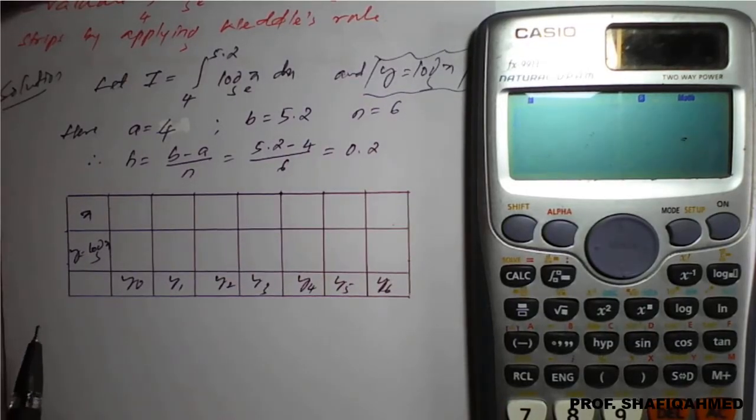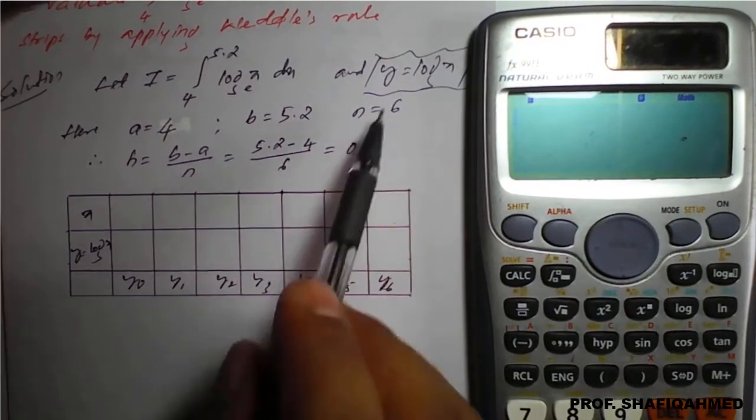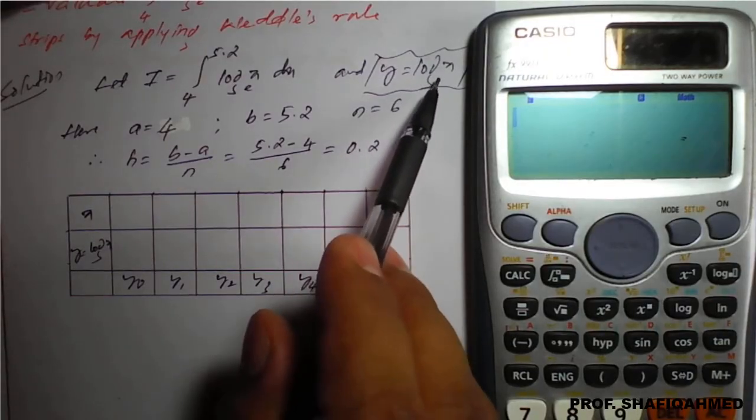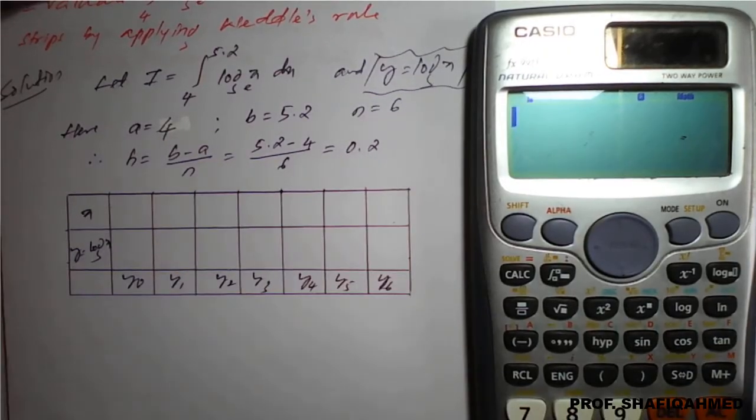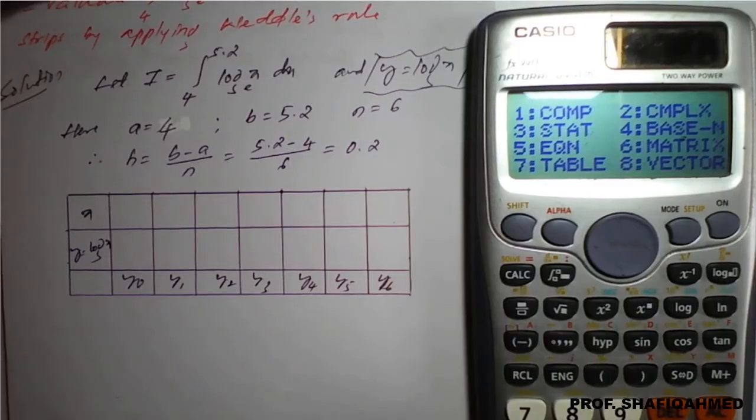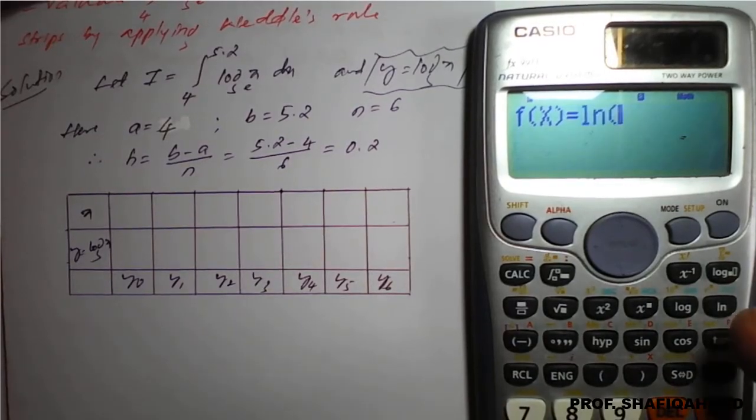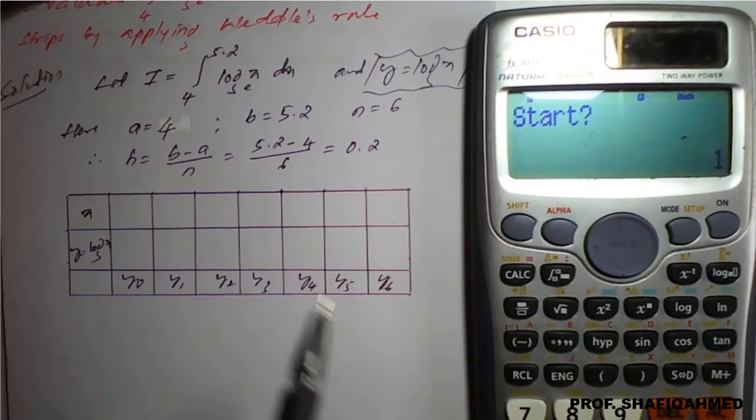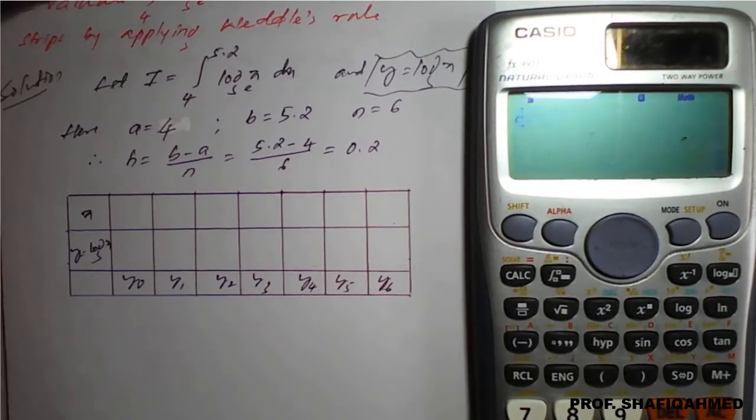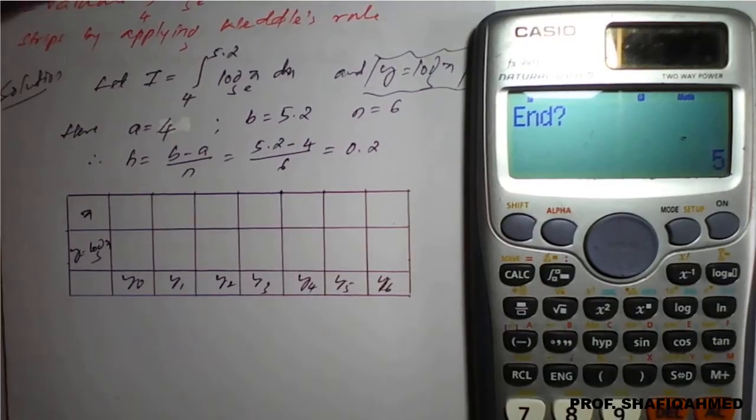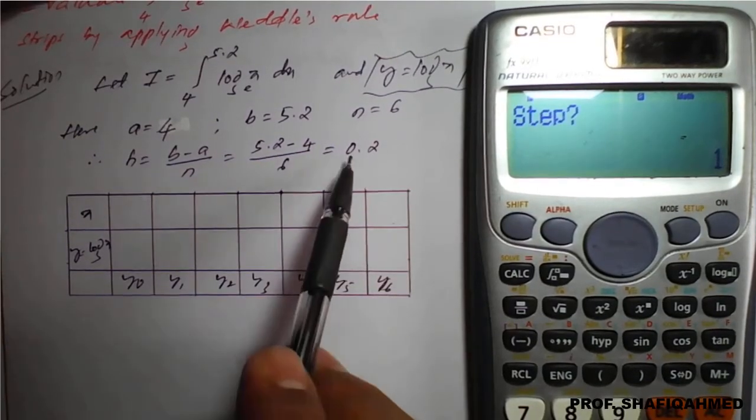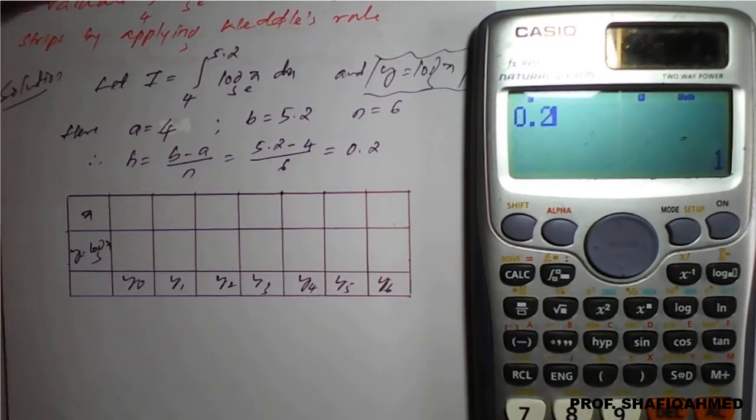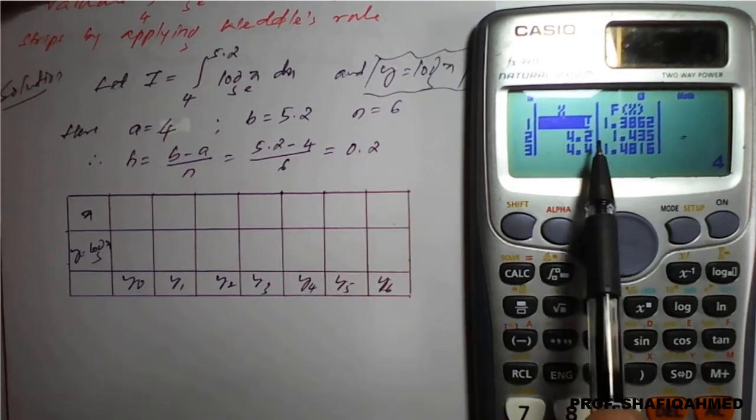For y equals log x to base e, we use ln. Using shift option 7, ln of alpha x equals: starting value a is 4, end value is 5.2, and step size is 0.2. See the table.